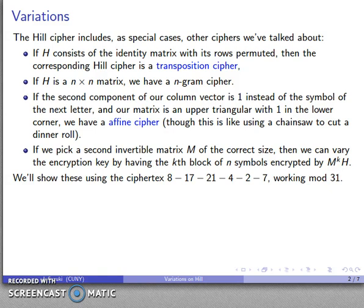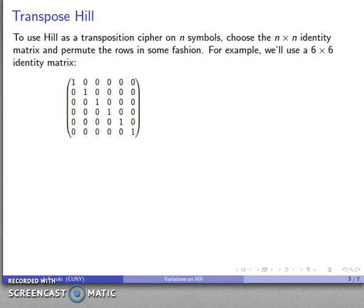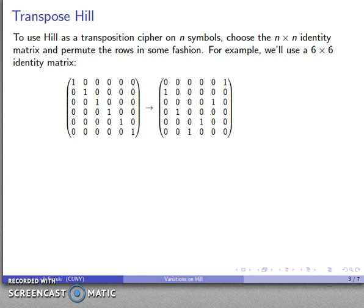I'll use the ciphertext 8-17-21-4-2-7 and I'll work mod 31. So to form a transposition cipher, what I'm going to do is choose an identity matrix and permute the rows in some fashion. For example, let's say I want to use blocks of 6. I'll take a 6 by 6 identity matrix and switch the rows around in some fashion. Completely arbitrary, it doesn't make any difference how I do that.